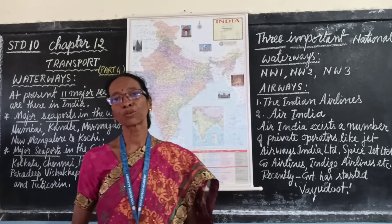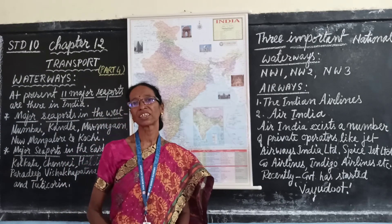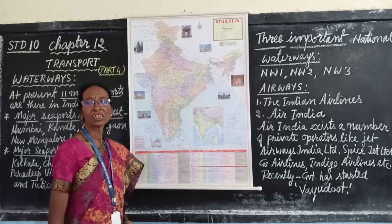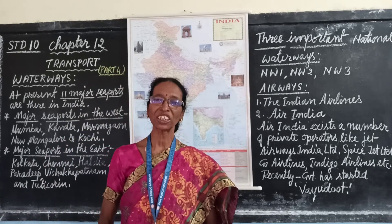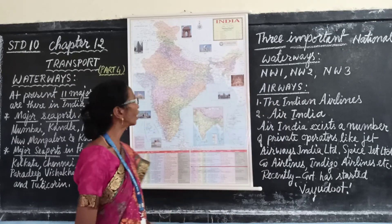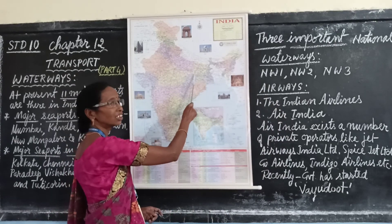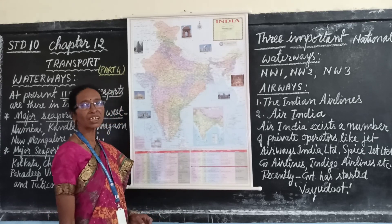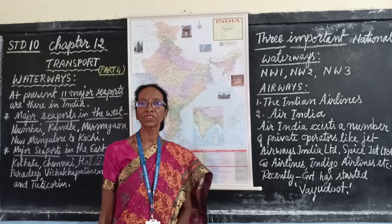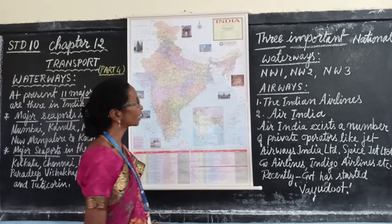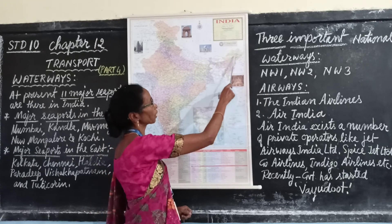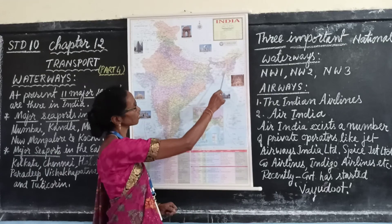Waterways are of different parts. Inland waterways are also very important. On the basis of their importance, there are some national waterways. National Waterways One is in the parts of river Ganga, where it flows over a plain area, in the Ganga plain. This is navigable and is a very important means of transport for boats and passengers. National Waterways Two is in the river Brahmaputra and it is navigable in the parts of Assam region and Bangladesh.